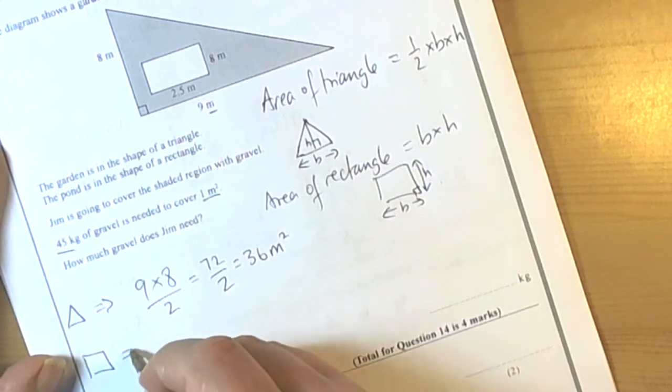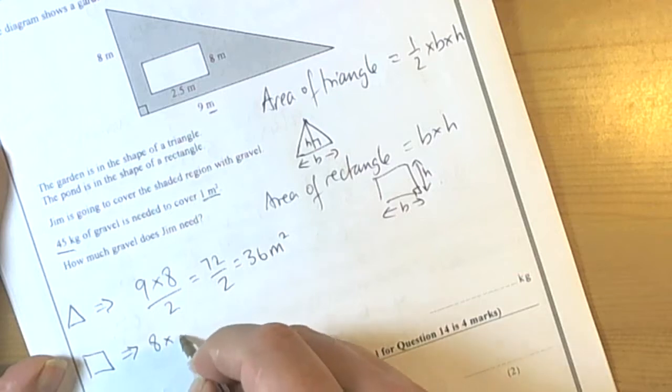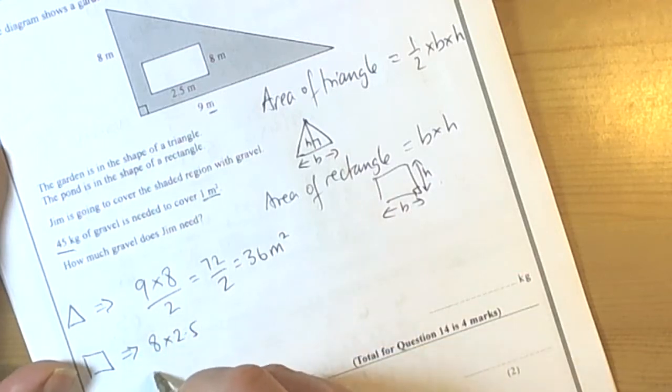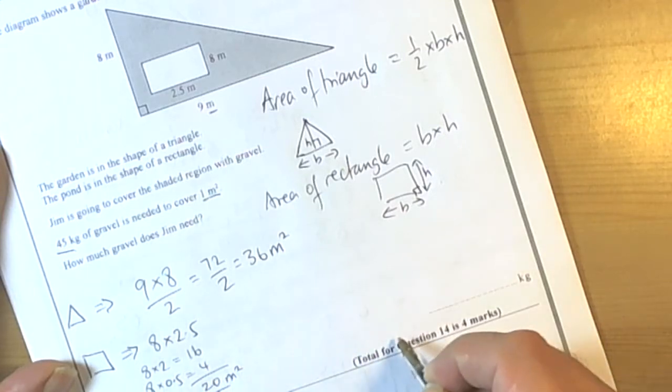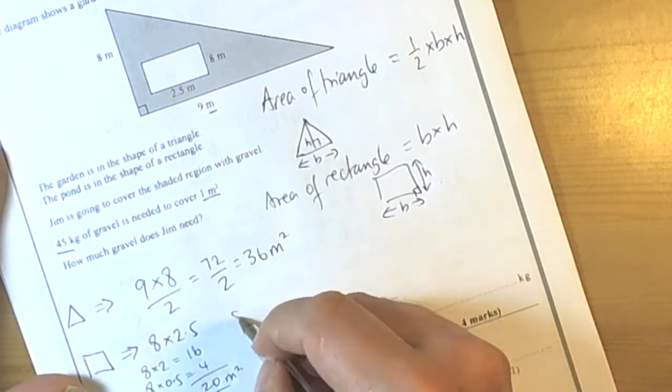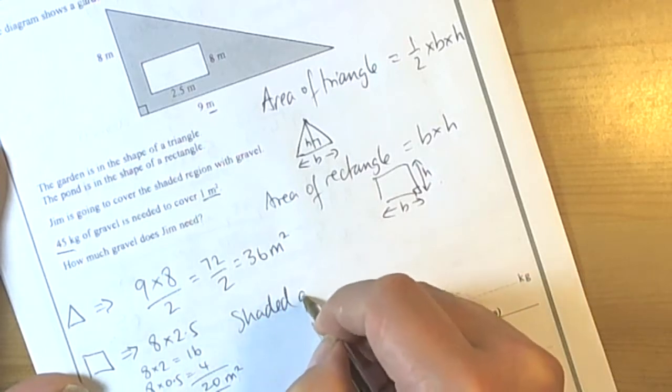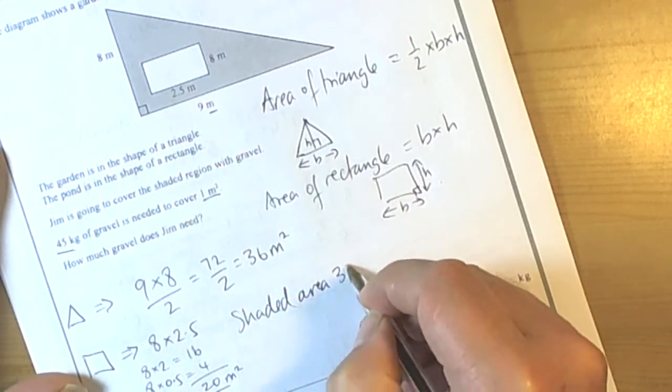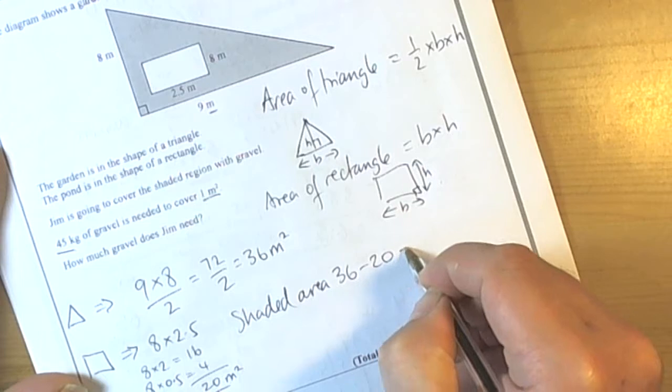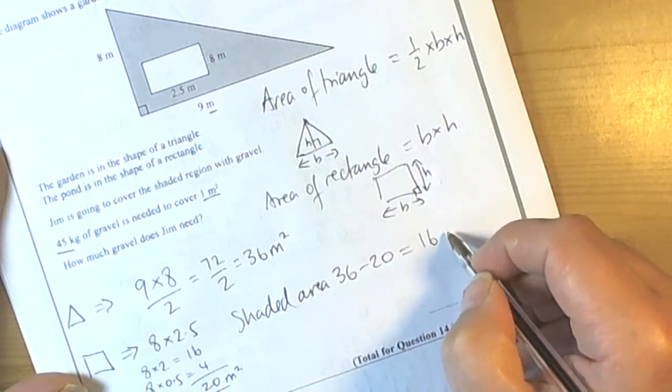For the rectangle we're going to do 8 times the 2.5. A quick way of doing that could be 8 times 2 is 16, and 8 times the 0.5 is 4. So altogether then the rectangle is 20 square meters. So the shaded area is going to be 36 subtract 20 is 16 square meters.